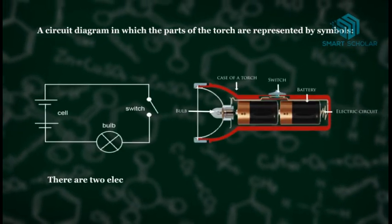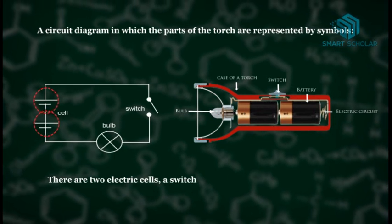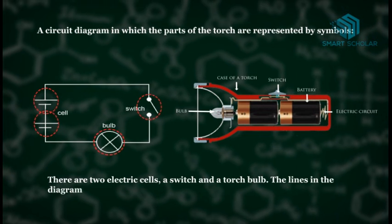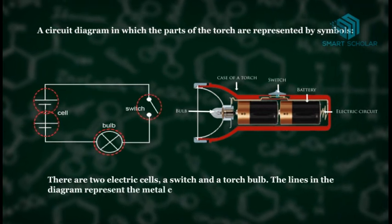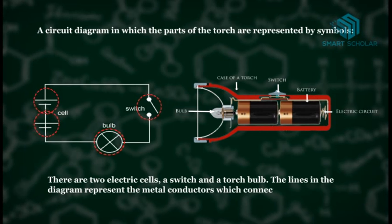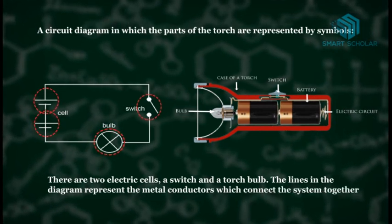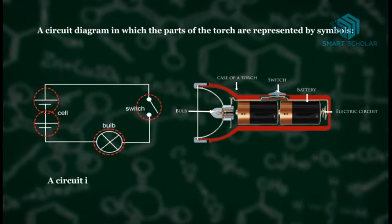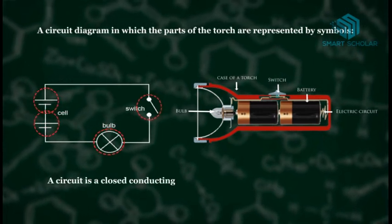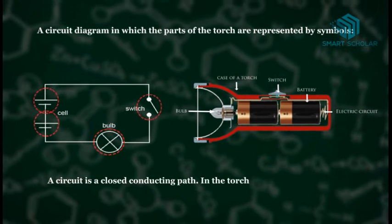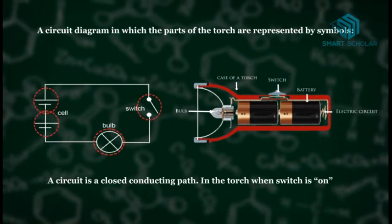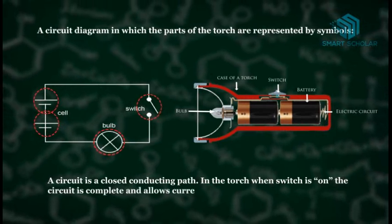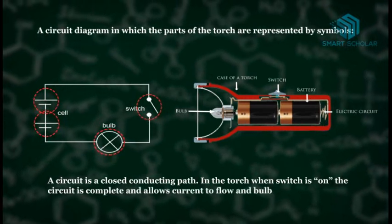There are two electric cells, a switch and a torch bulb. The lines in the diagram represent the metal conductors which connect the system together. A circuit is a closed conducting path. In the torch, when switch is on, the circuit is complete and allows current to flow and bulb glows.